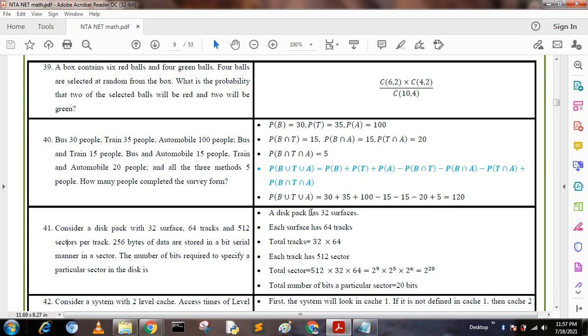A disk pack has 32 surfaces, each surface has 64 tracks, so total tracks = 32 × 64. Each track has 512 sectors, so total sectors = 512 × 32 × 64 = 2^9 × 2^5 × 2^6 = 2^20. So the total number of bits to specify a particular sector is 20 bits.